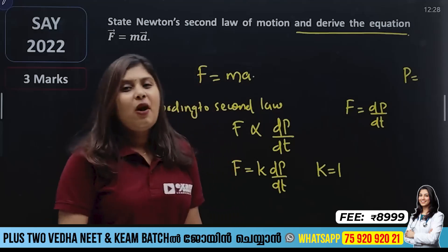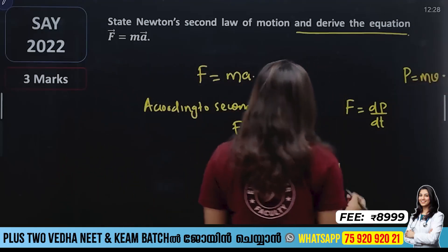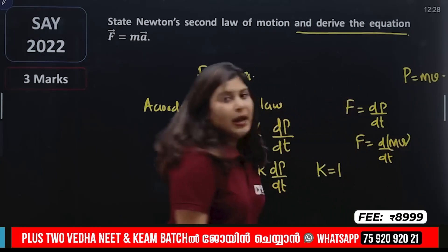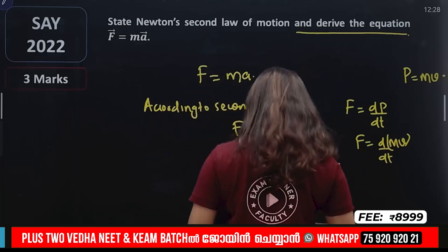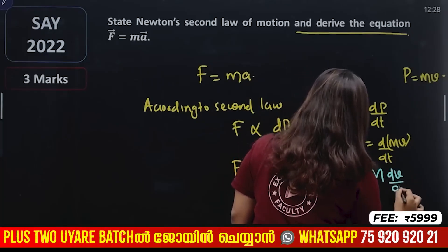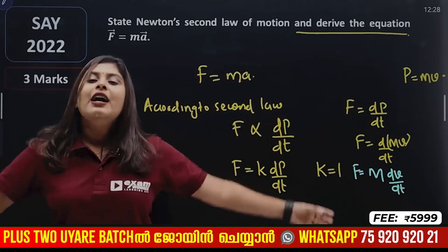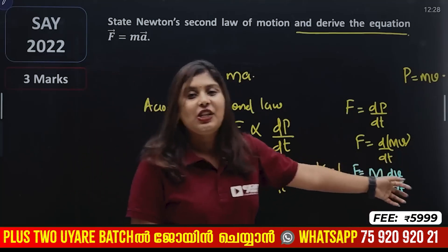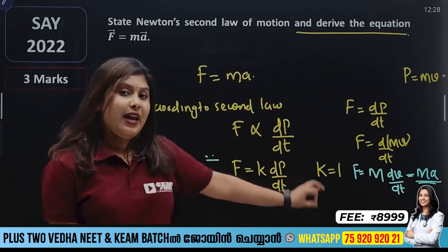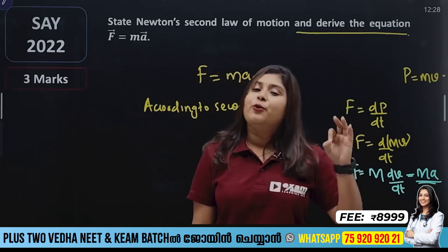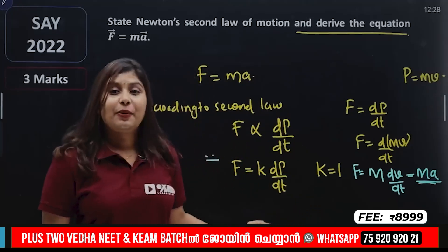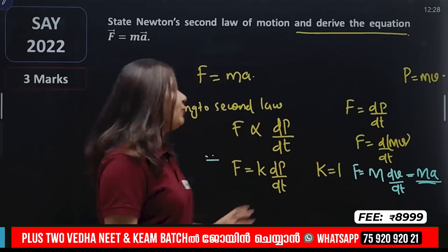Since momentum is mass into velocity, F equals d by dt of mass times velocity. Since mass is constant, F equals m into dv by dt. The rate of change of velocity is acceleration, so F equals m into a, giving us F = ma.